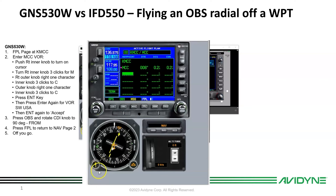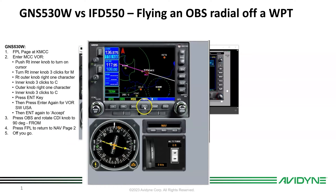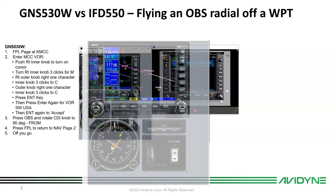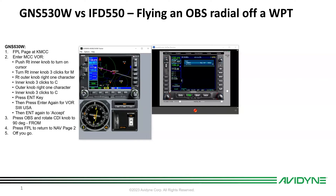Now let's hit the OBS button and spin the knob to dial in east. Then let's turn off the flight plan page — just go back to the knob. Now you can see we're sitting there and ready to roll. Let's apply some throttle so the simulator will take off. The airplane will fly outbound indefinitely on the 90-degree radial.